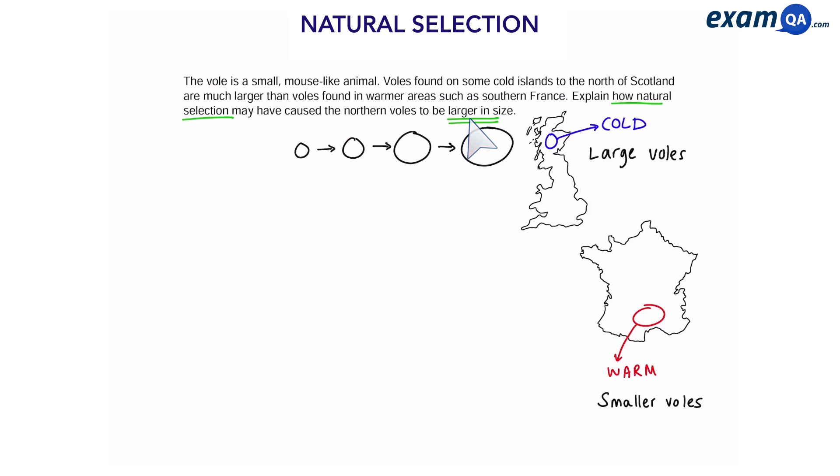Now the first thing is we're going to say that there was variation due to mutations. Step two, what is threatening the voles in Scotland? It says that the weather was cold. So what does that mean? It means that larger voles which lose less heat are better insulated.